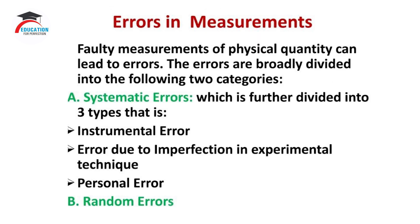Now let us understand about errors in measurements. Faulty measurements of a physical quantity can lead to errors. Errors are broadly divided into two categories: first, systematic errors, which are further divided into three types — instrumental error, error due to imperfection in experimental technique, and personal error; and second, random errors.